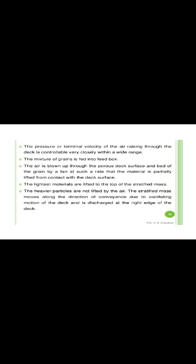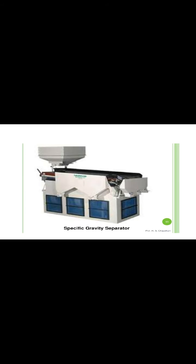The stratified mass moves along the deck due to the oscillating motion of the deck and is discharged at the right edge. This is the specific gravity separator. It consists of a feed hopper, perforated deck, air chest, fans inside the air chest, a base and frame, and a number of discharge outlets.